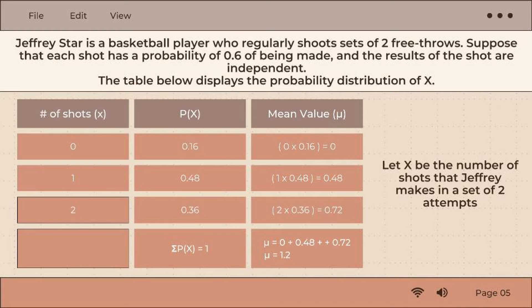The table below displays the probability distribution of x. First is the number of shots which is 0 and 0.16. So 0 times 0.16 equals 0, and that is the mean value.